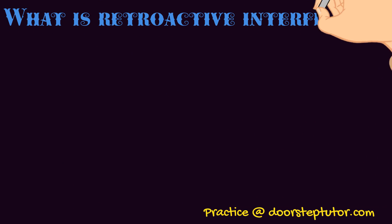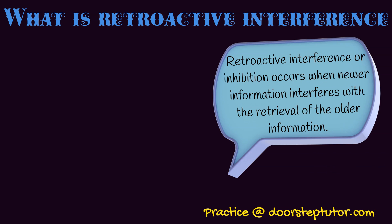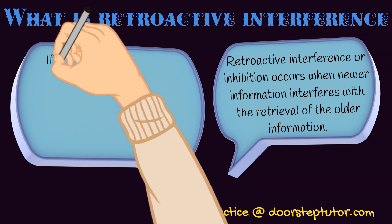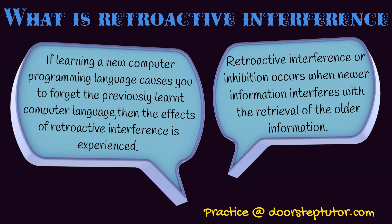Retroactive interference is the opposite of proactive interference. In retroactive interference, new information interferes with the recall or retrieval of older information. This also happens in daily life: whenever we learn something new or difficult, it often causes us to forget older information. For example, if we recently learned Java programming language while having earlier learned C++, the Java language may cause us to forget the previously learned C++. This is an effect of retroactive inhibition.